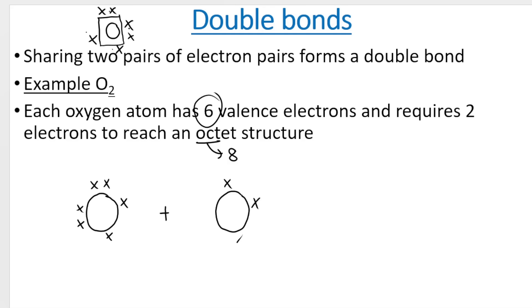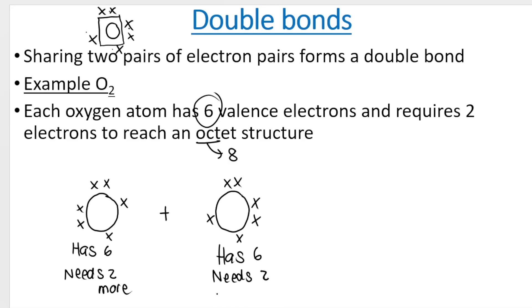Both oxygen atoms have six valence electrons and need two more to reach octet structure. The oxygen on the left needs two more, so it's going to share two electrons with the oxygen on the right. And the oxygen on the right also needs two more, so it will share its two electrons with the oxygen on the left. This means each of them needs to share two — and that's exactly what creates a double bond. All the highlighted electrons will be shared because each atom needs two more.